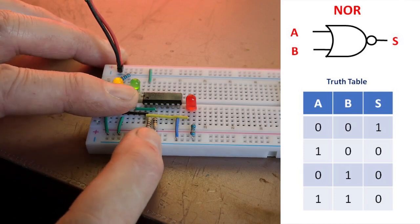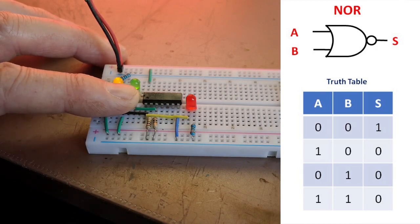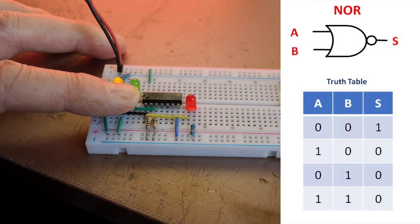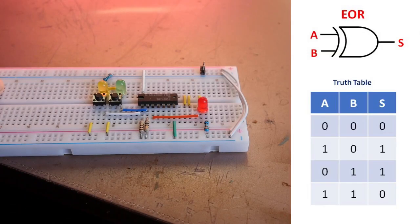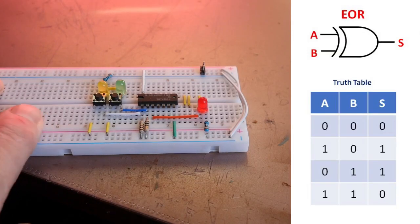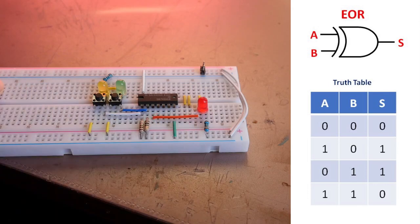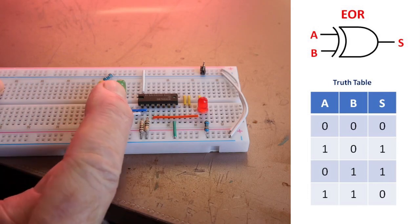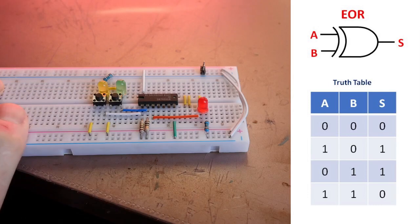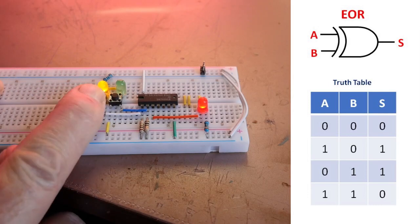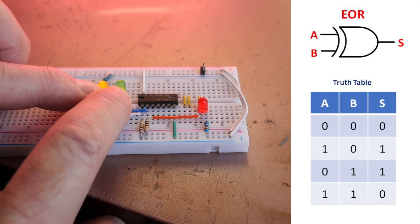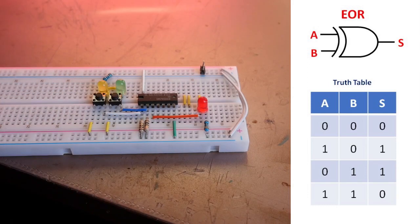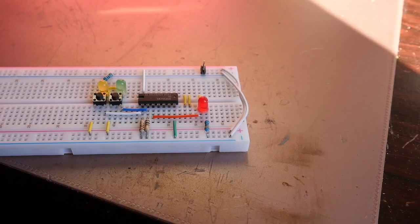And this is the exclusive OR. So truth table: both inputs low, output is low, second input high output goes high, first input high output also goes high, both together so both inputs high output is low. So that's the EOR or exclusive OR.